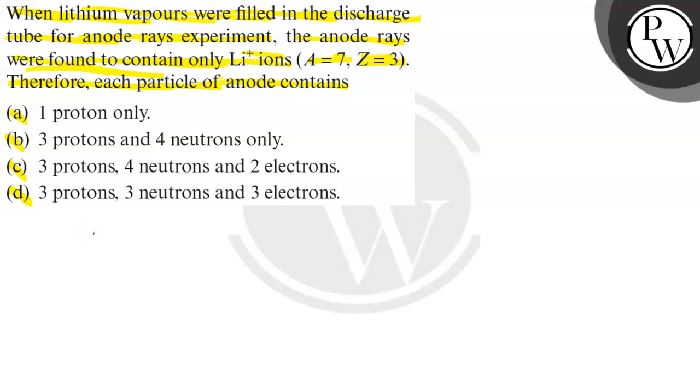Li plus, lithium atomic number is 3. It is given in the problem. Z is equal to 3. Z equals 3 means number of protons is equal to Z, that is equal to 3. So first option is wrong. One proton only? No, it consists of 3 protons.